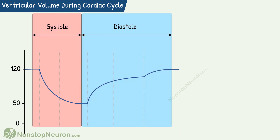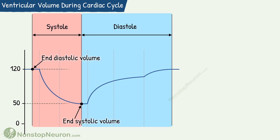Now there are some important parameters regarding ventricular volume. These are end diastolic volume, end systolic volume, stroke volume, and ejection fraction. Let's see them one by one.